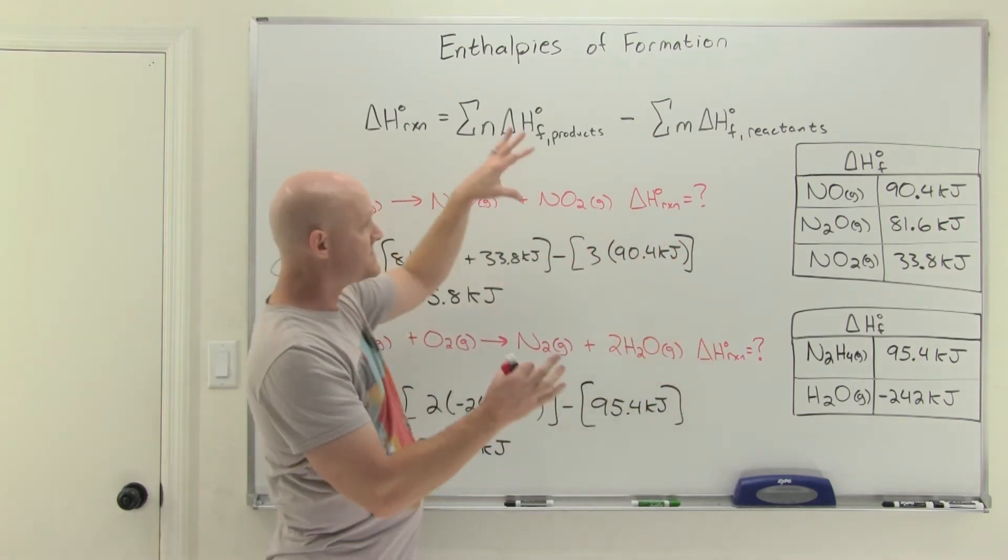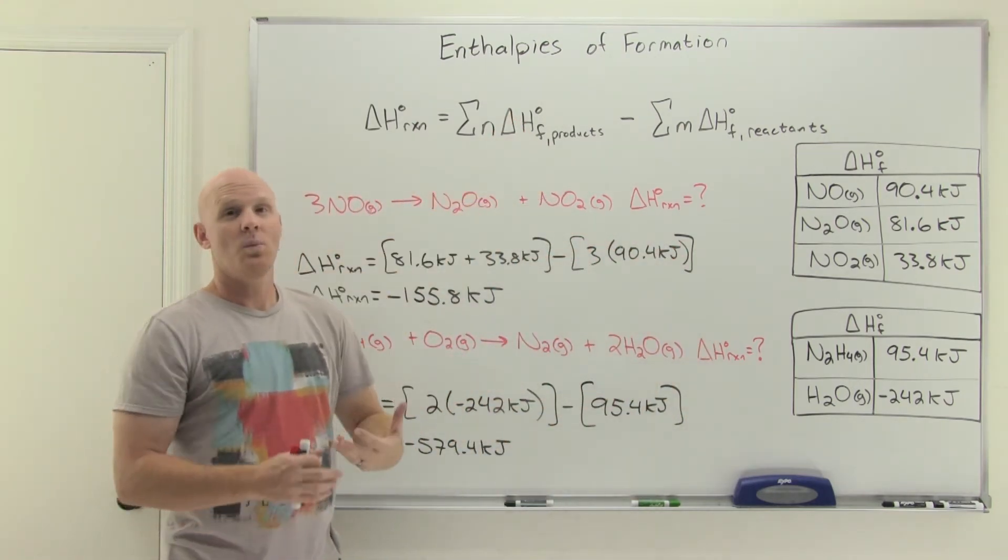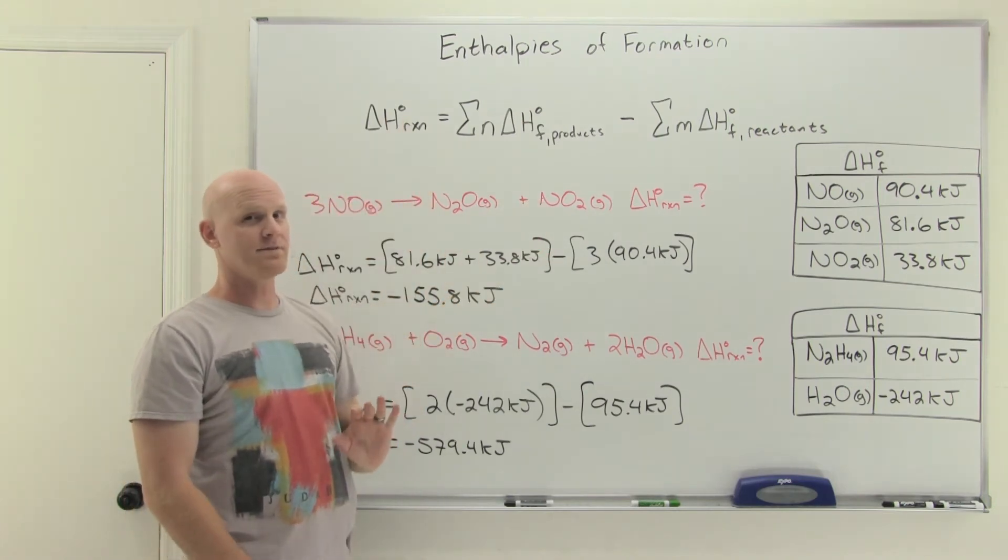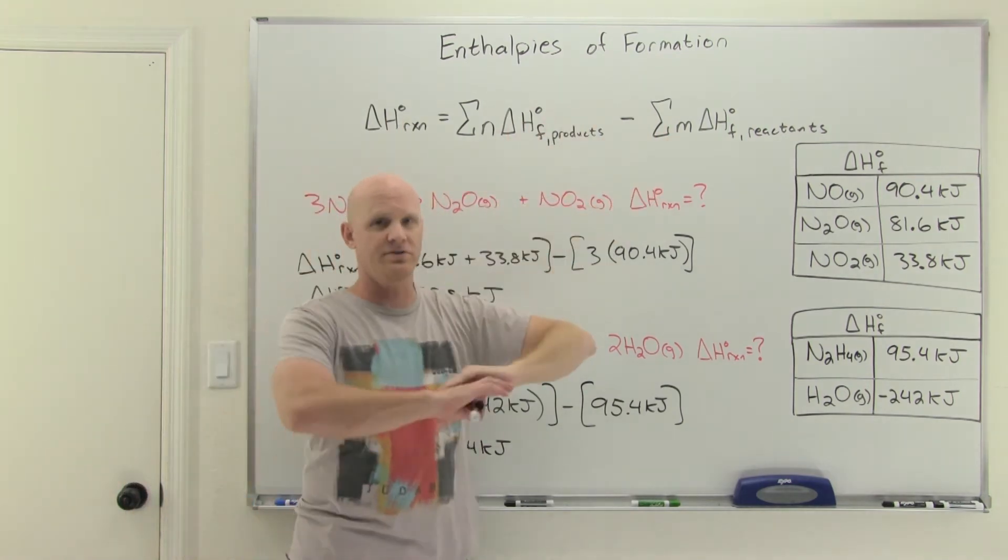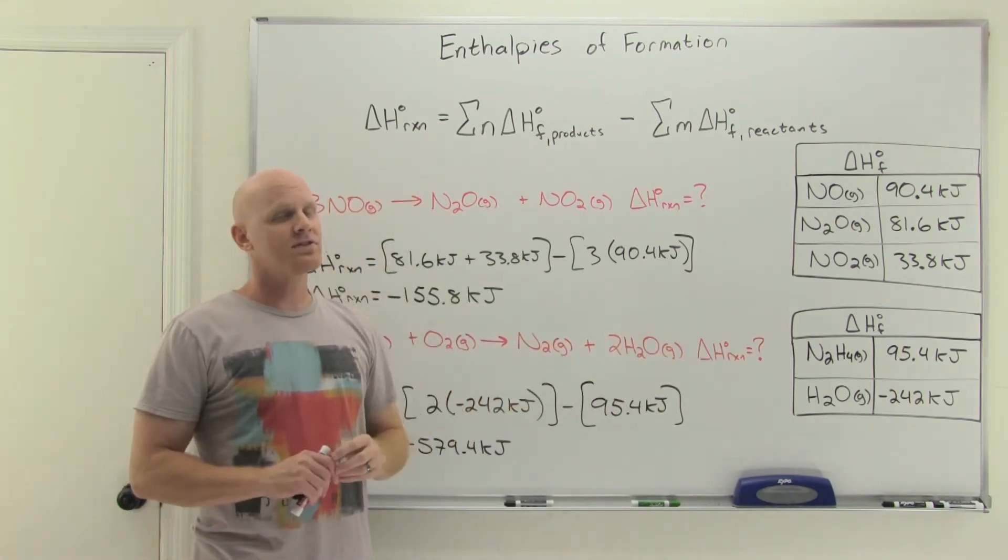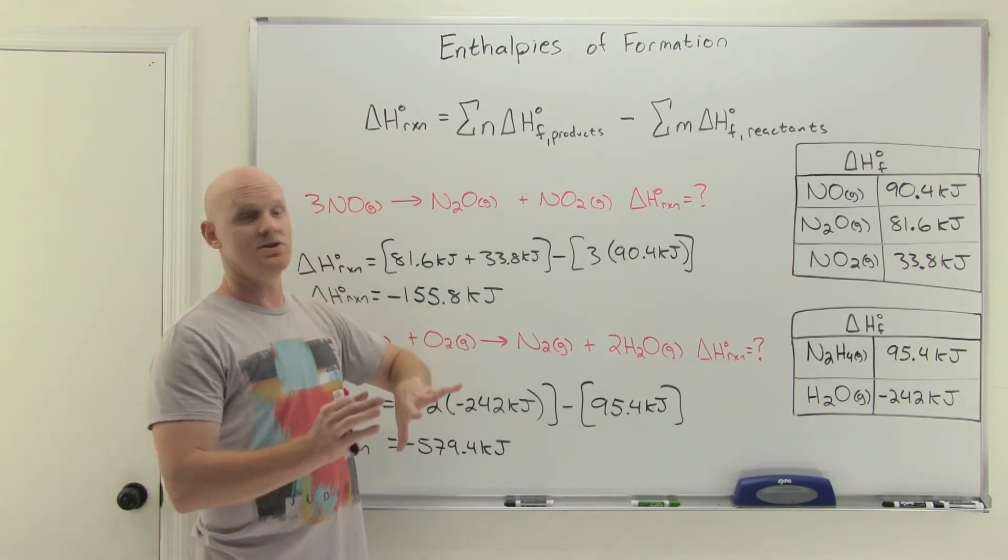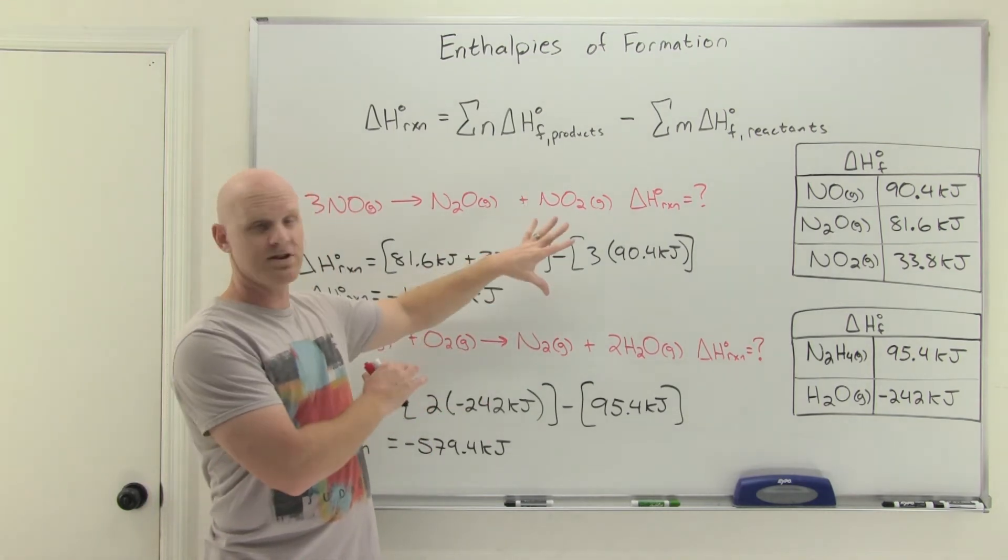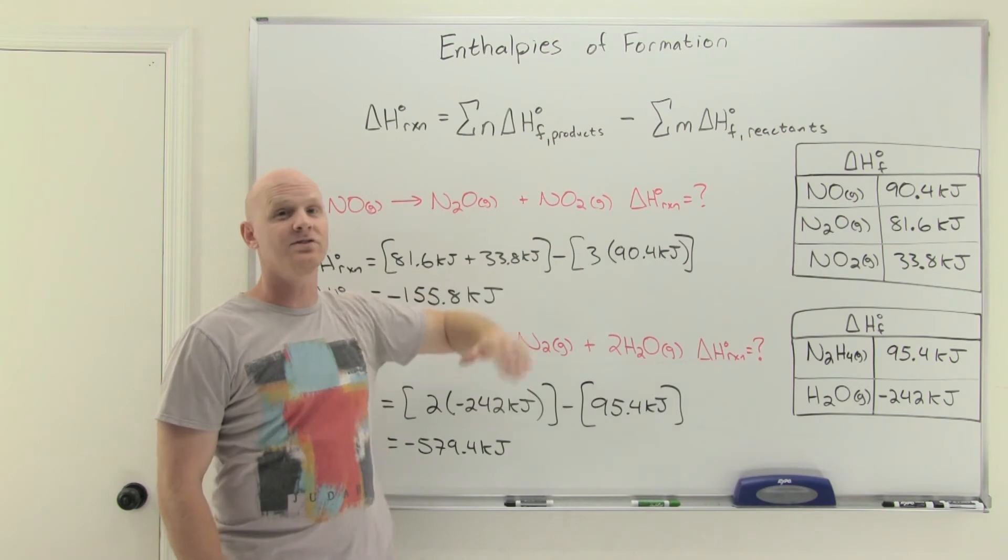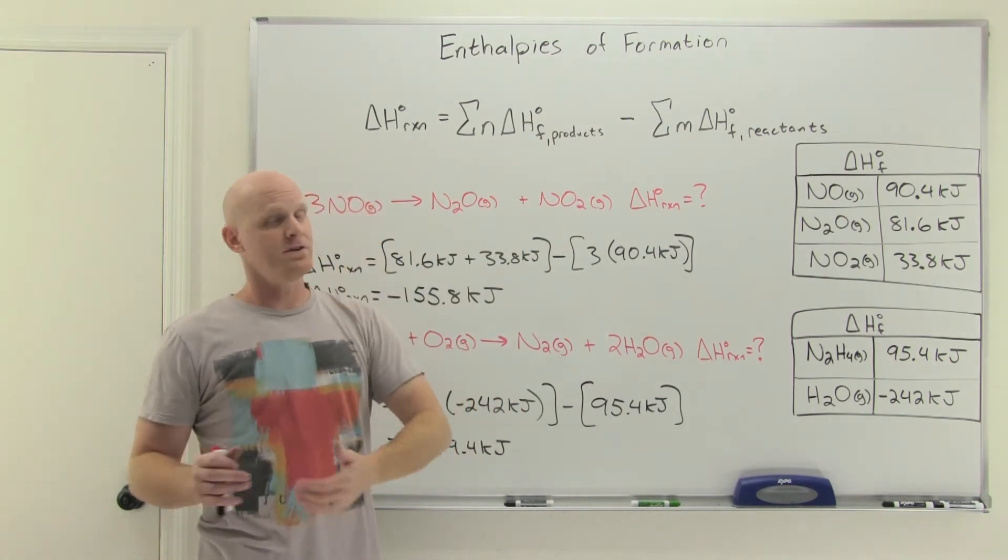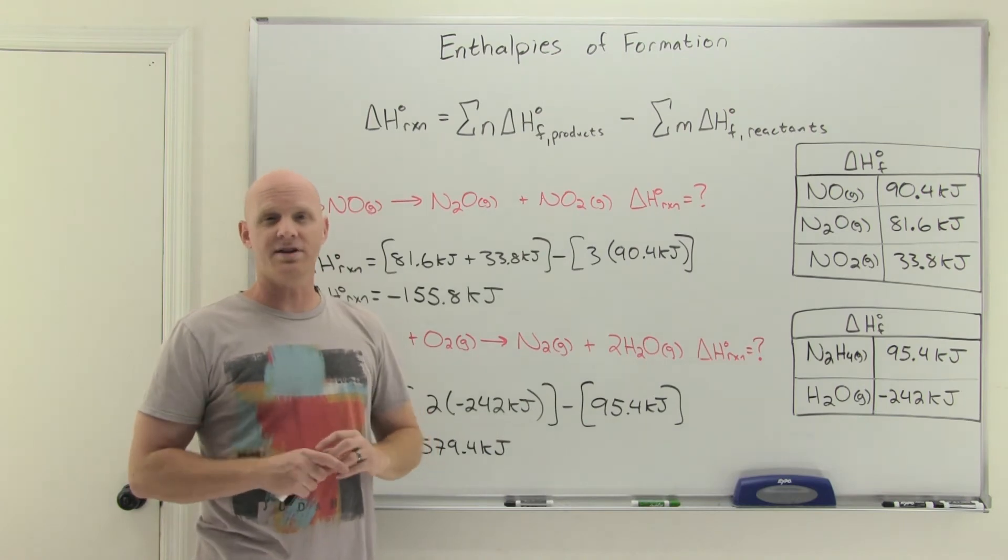It works the same way here. We just use our enthalpies of formation values, but we haven't even defined it yet. We just knew that we didn't have to define it. We had to just do products minus reactants, done. But now we're going to take the step to go further and define it because it is a definition we want you to understand. But notice to use it, you don't have to define it. You don't have to know the definition to use it. It's just products minus reactants, a plug and chug calculation. But you may get some questions that do require you to know the definition.